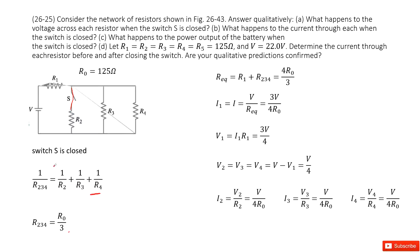Equivalent resistance for switch is closed is R1 plus R234, that is 4R0 over 3. Now the current in the circuit equals I1, which is V, the power supply, over the equivalent resistance. That is 3V over 4R0. Then we get V1 as I1 times R1, that is 3V over 4, three-quarters of V. Now we can get V2, V3, V4 as the power supply minus V1. That is one quarter of V.